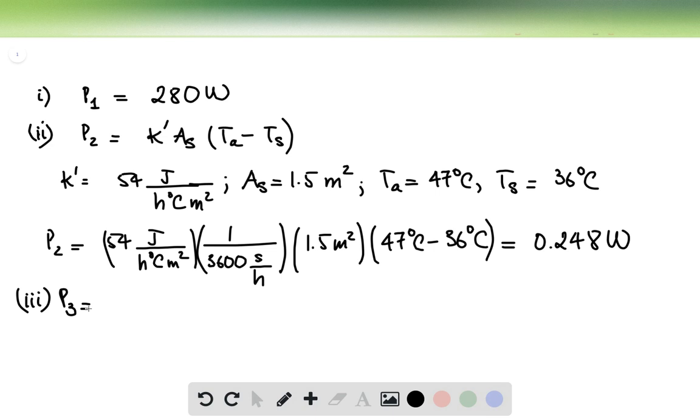So we just take this number multiplied by the area of the skin. So P3 would be equal to 1400 watts per meter squared, multiplied by 1.5 meters squared. And this is equal to 2.1 times 10 to the third watts.